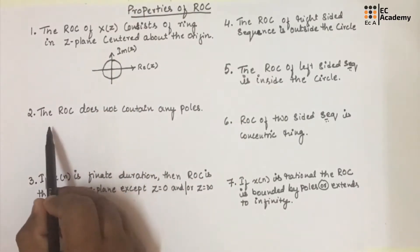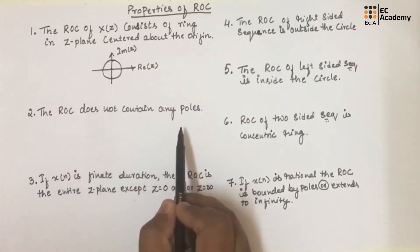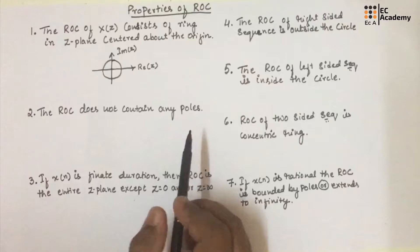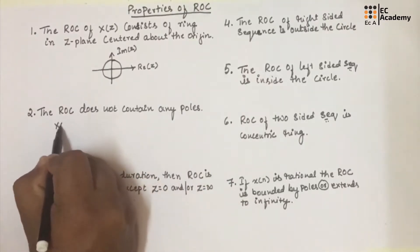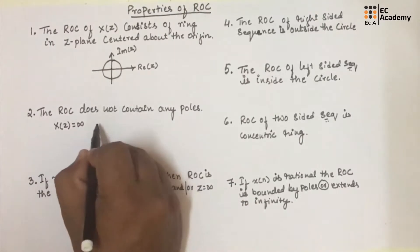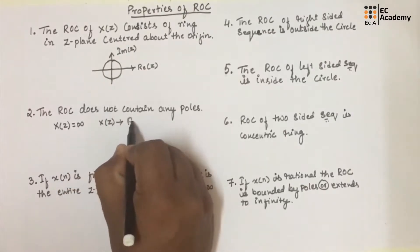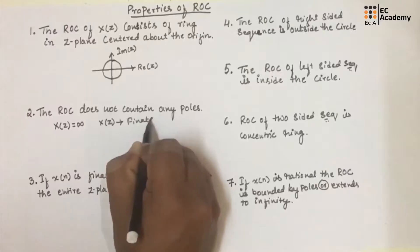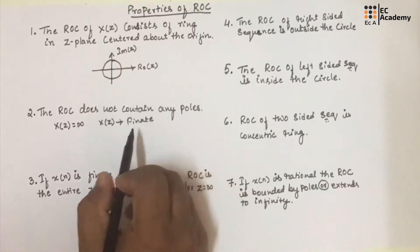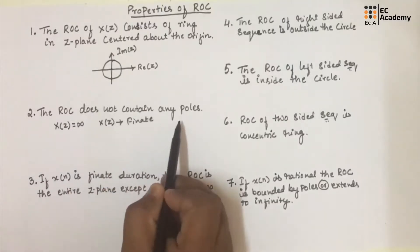The second property states that the ROC does not contain any pole. The pole is where X(Z) is infinity. Since X(Z) should be a finite value for convergence, that is why we can say the ROC does not contain any poles.